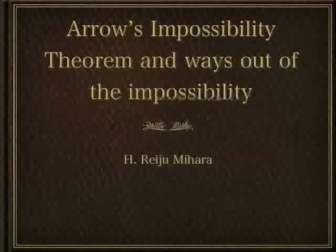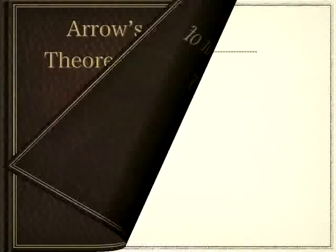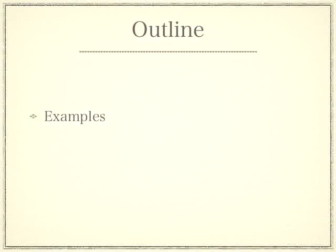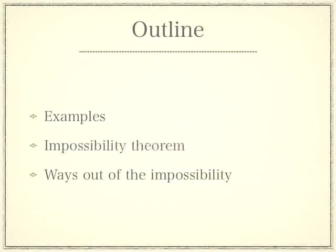Here's an outline. First, I give motivating examples — I introduce notions like Borda's rule and the paradox of voting. Second, I describe the notion of aggregation rules and state the theorem. Finally, I explore several possible ways to escape from the impossibility. OK, let's begin.